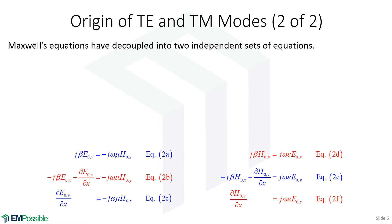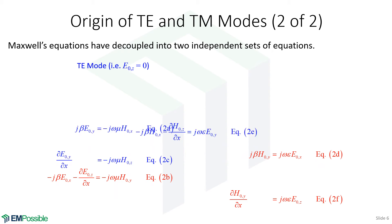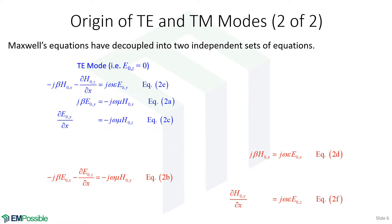So Maxwell's equations have actually separated into two independent sets of three equations. The blue equations we will call the TE mode, and that's because there is no E_z anywhere in them.